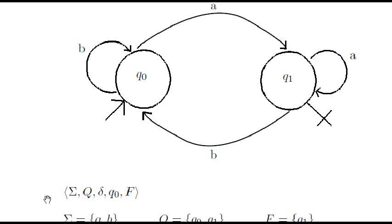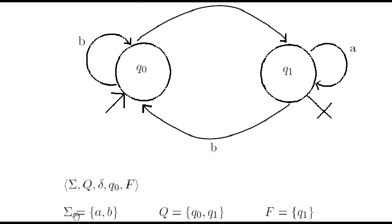In this case, sigma is the set containing a and b. The set of states, we call q0 to the first one and q1 to the second. We call it the first one q0 because it is the initial state. As only accepting state, we have q1.